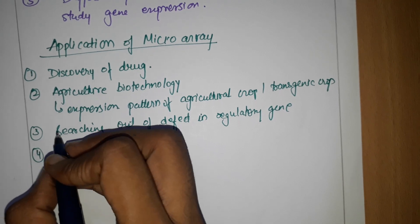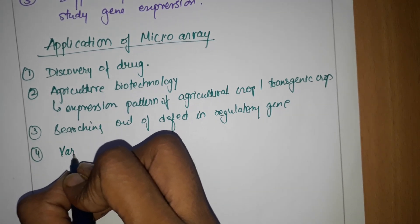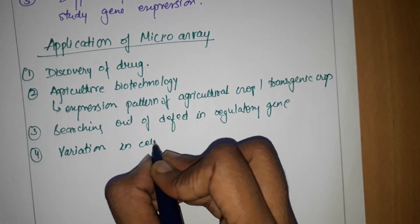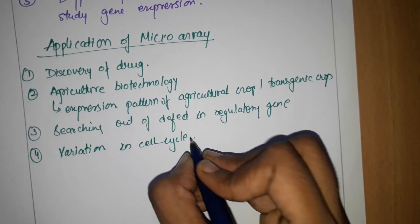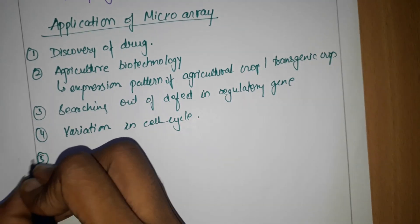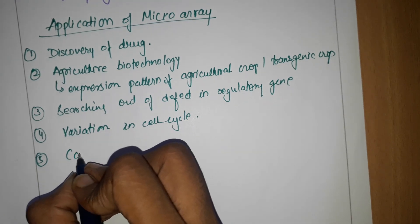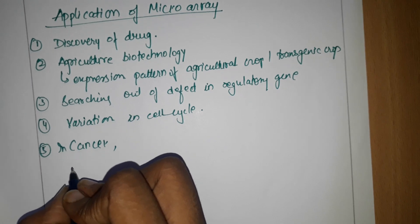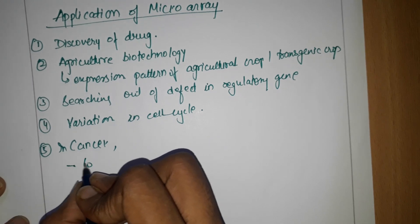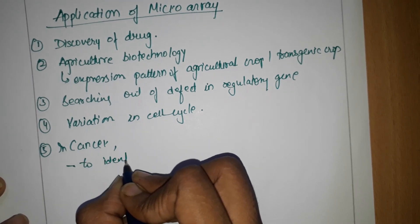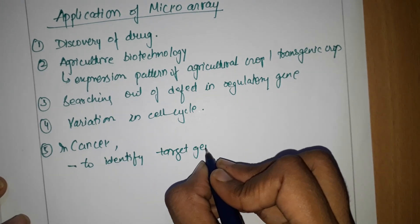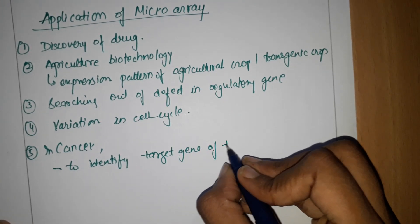Next application is for the variation in the cell cycle. For cancer, its application is very important to identify target genes of tumor suppression.